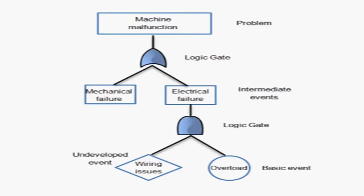If we talk about the logic gate, there can be two possible things: one is a mechanical failure and the second is an electrical failure. Both of these can be considered as intermediate events. If we bifurcate further the electrical failure, there can be two more possible failures forming another logic gate: one is a wiring harness issue and the second is an overload issue. Assuming we finalize that overload is actually causing the real problem, we term that as a basic event, and the wiring harness we call an undeveloped event.